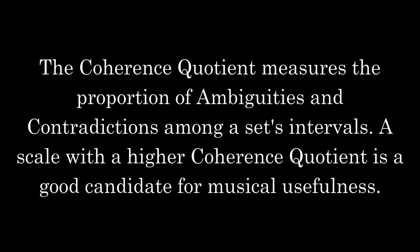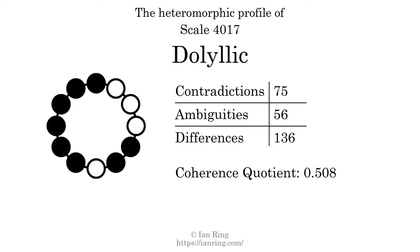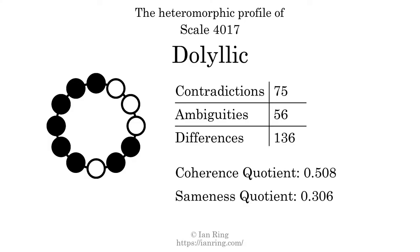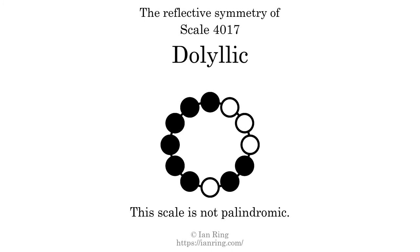The coherence quotient measures the proportion of ambiguities and contradictions among a set's intervals. A scale with a higher coherence quotient is a good candidate for musical usefulness. The coherence quotient is 0.508. The sameness quotient measures the proportion of heteromorphic differences among a set's intervals. A scale with a higher sameness has fewer differences, so it is also a good candidate for musical usefulness. The sameness quotient is 0.306.